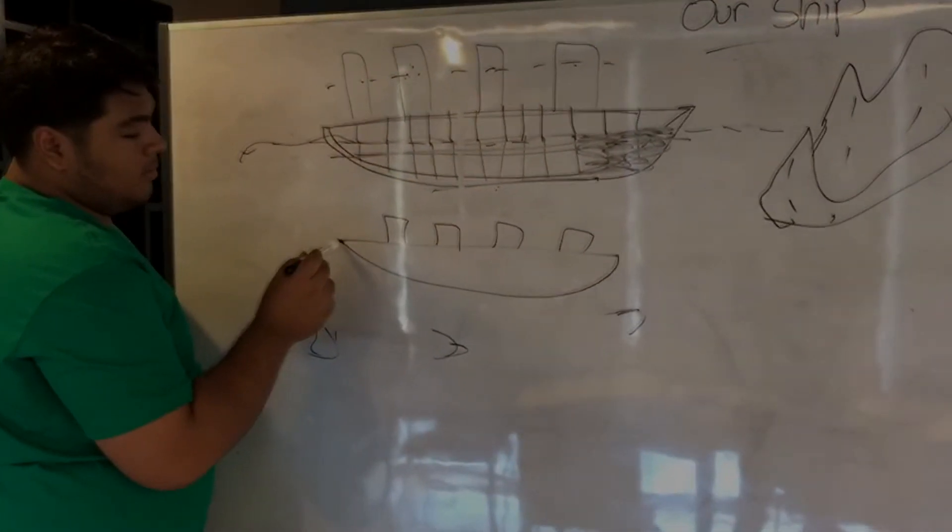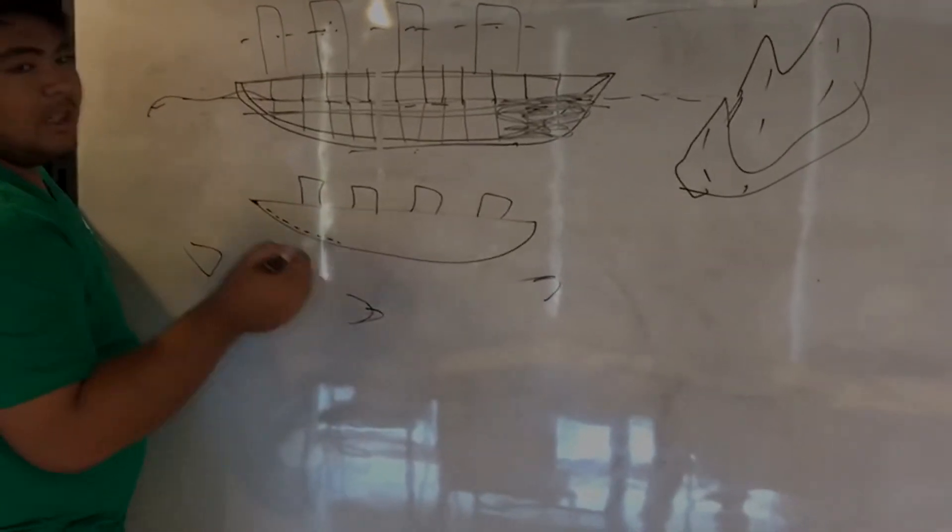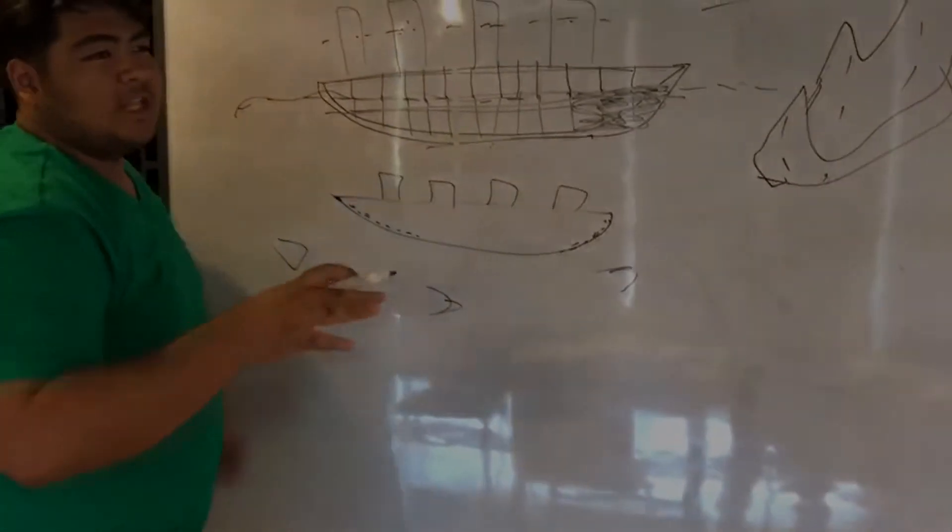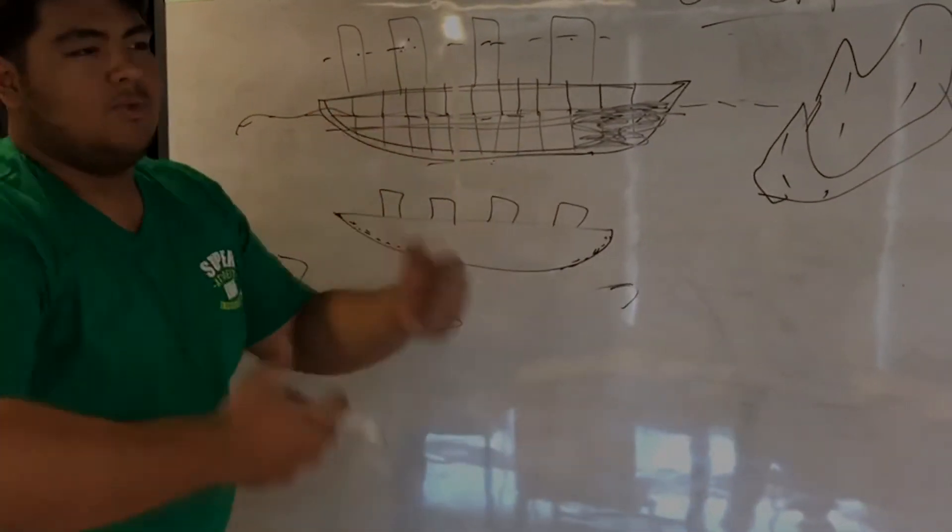And we have a ballast tank that will rapidly fill itself with water from bow to stern and front to back in the case that the ship pitches forward or backwards so it will restabilize itself.